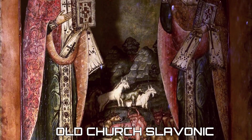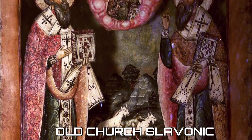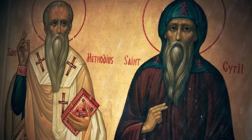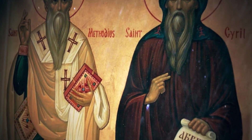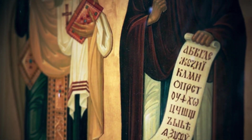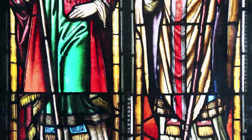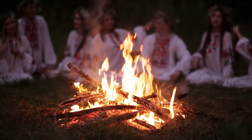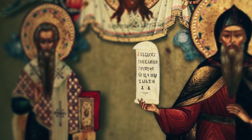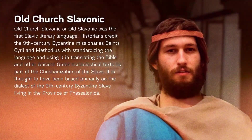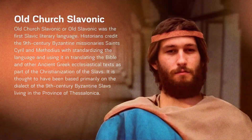Crafted by Saints Cyril and Methodius in the 9th century, Old Church Slavonic served the liturgical and literary realms of medieval Slavic culture. It was more than a language — it marked the inaugural literary expression for Slavic people, a cornerstone in cultural and religious growth.